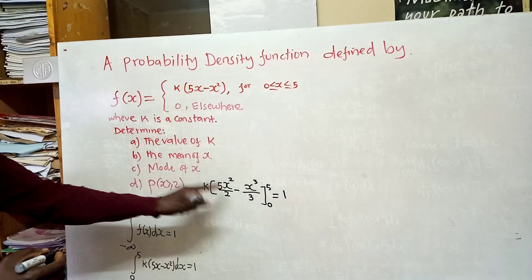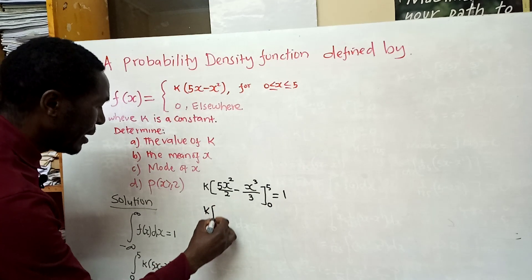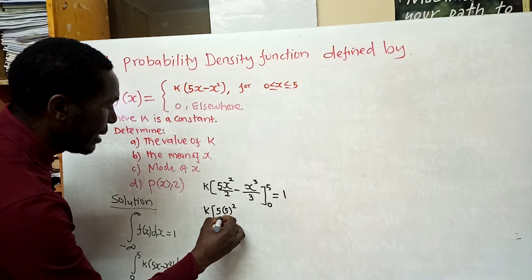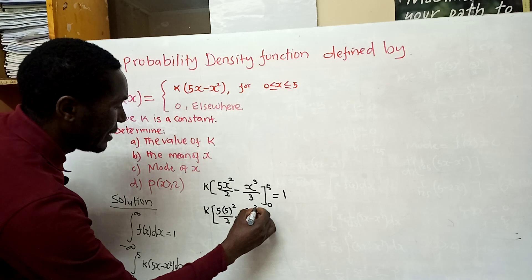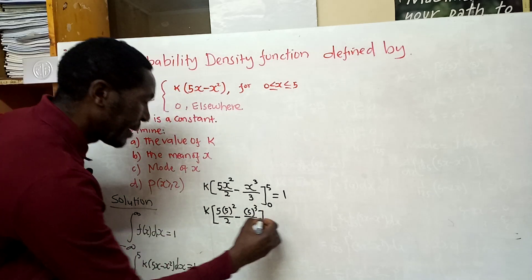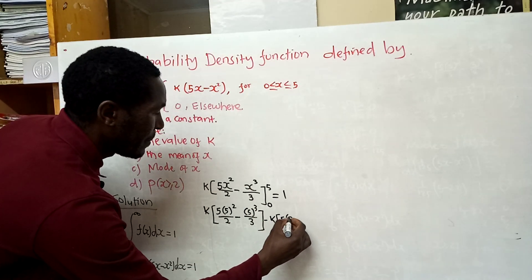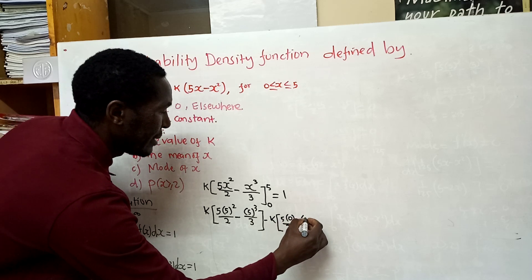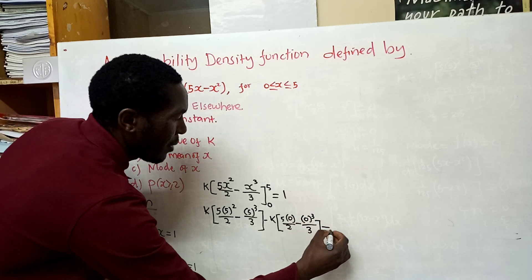Substituting x = 5 first, we get k times [5(5²)/2 - 5³/3], then we subtract the lower limit substitution: k times [0/2 - 0³/3]. We equate this to 1.